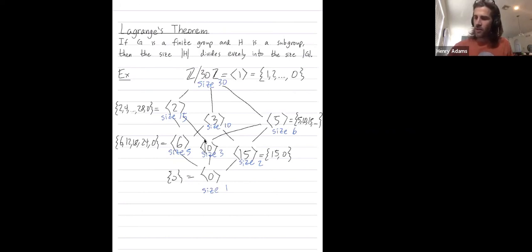So these line segments in here show the subgroup relations so long as you allow yourself to follow the paths. So this subgroup generated by 10 is a subgroup of z mod 30, and I could see that by following two paths. Or the subgroup generated by 0 is a subgroup of this group generated by 3, and I could see that by following those paths up. Notice that all of these numbers, 30, 15, 10, 6, 5, 3, 2, and 1, they all divide the size of the group.